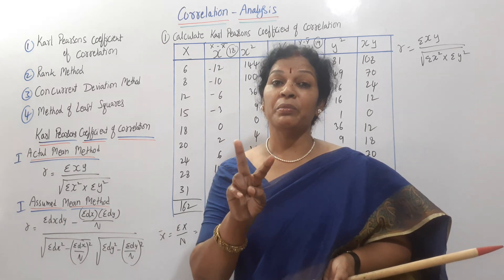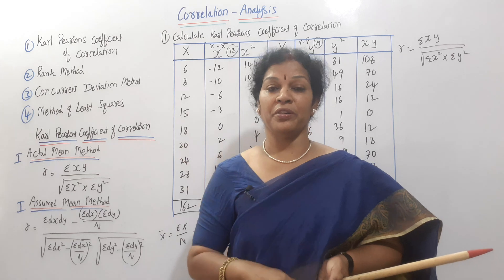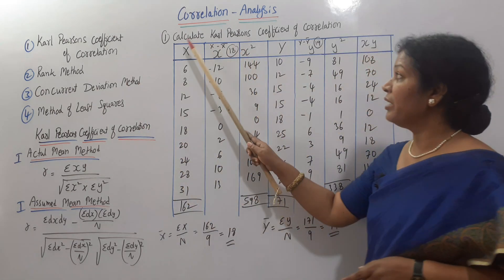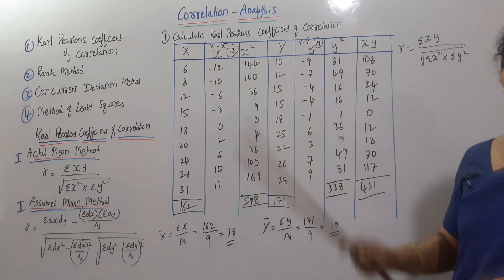In this problem, there are two variables, X and Y. We need to calculate Carl Pearson's Coefficient of Correlation.